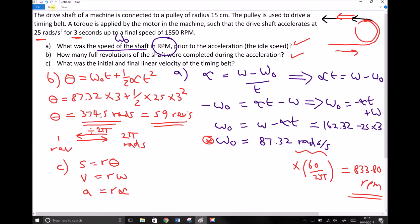So hopefully you can see our calculations here are very straightforward. We want the initial linear velocity of the belt, so v zero, and we want the final velocity of the belt, v.